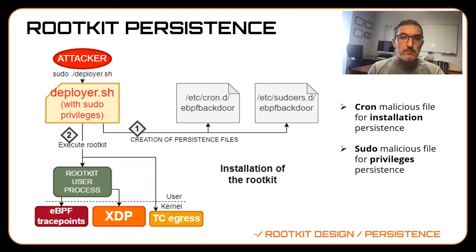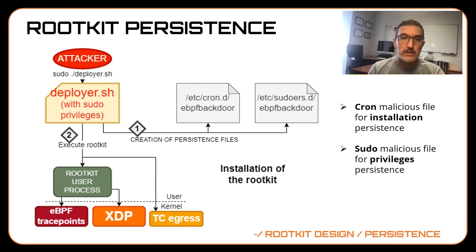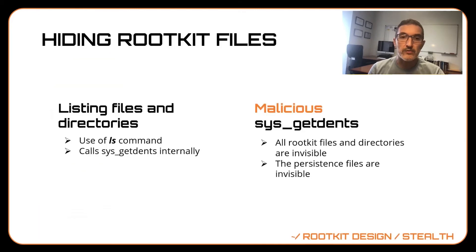Regarding persistence, we use two well-known techniques. First, we use the cron system to ensure that after a reboot an automatic process will reinstall the rootkit. Second, we use the proc system to ensure the rootkit is loaded with root privileges. To hide the rootkit files, the stealth module uses trace point programs that tamper with system calls to hide the files and directories belonging to the rootkit. The result is that the rootkit is both stealthy and persistent.